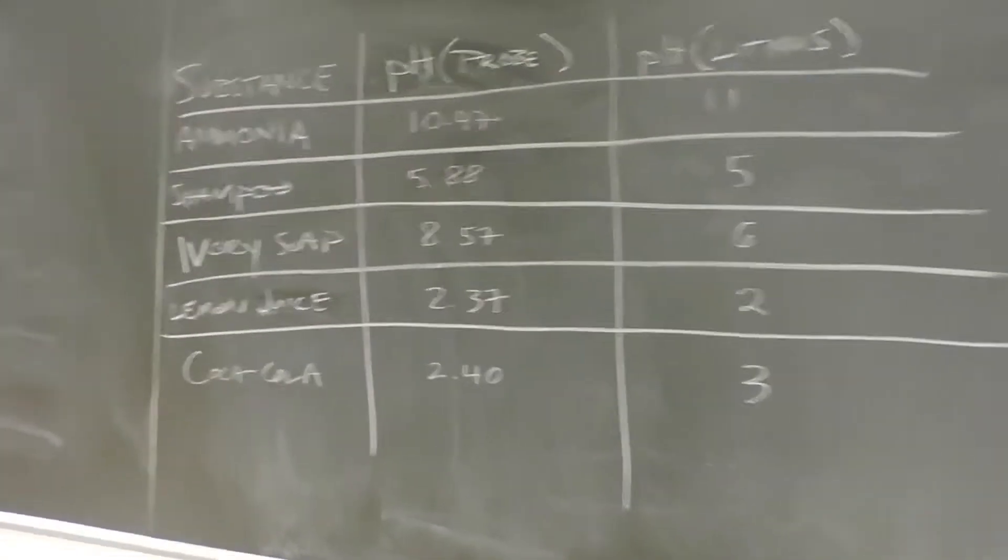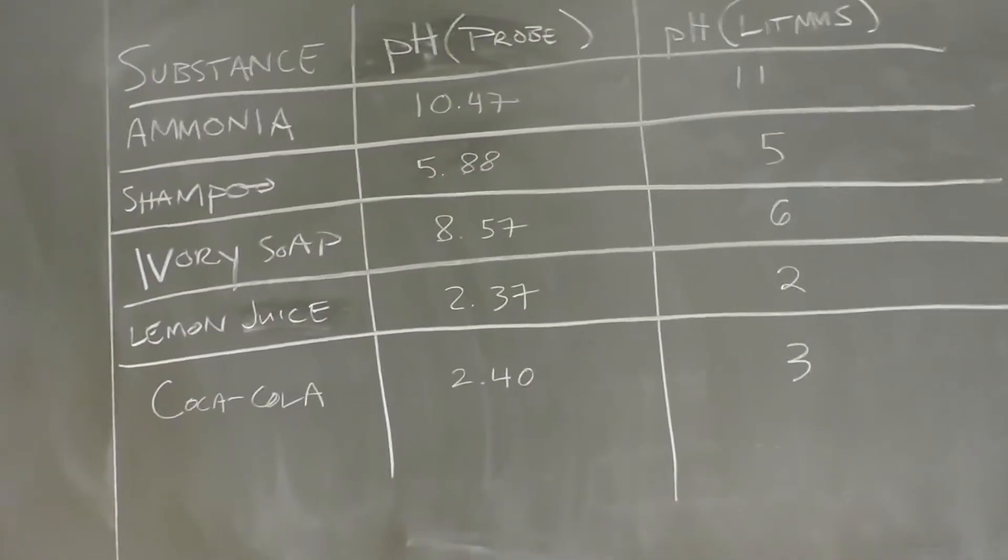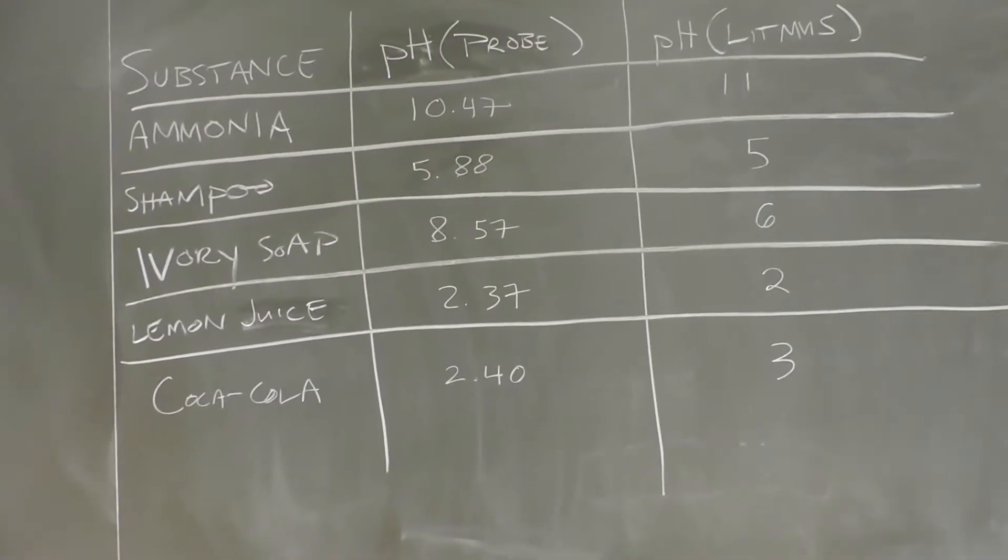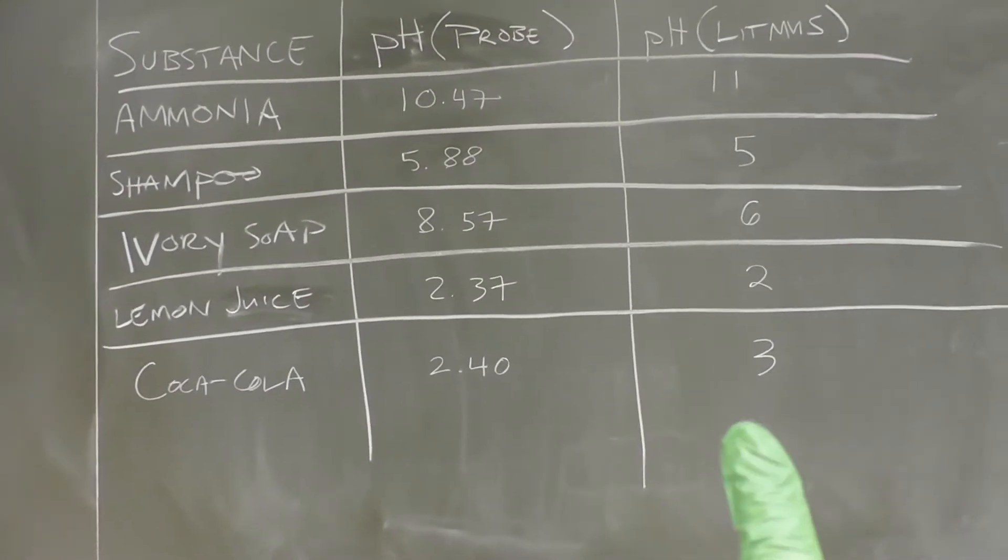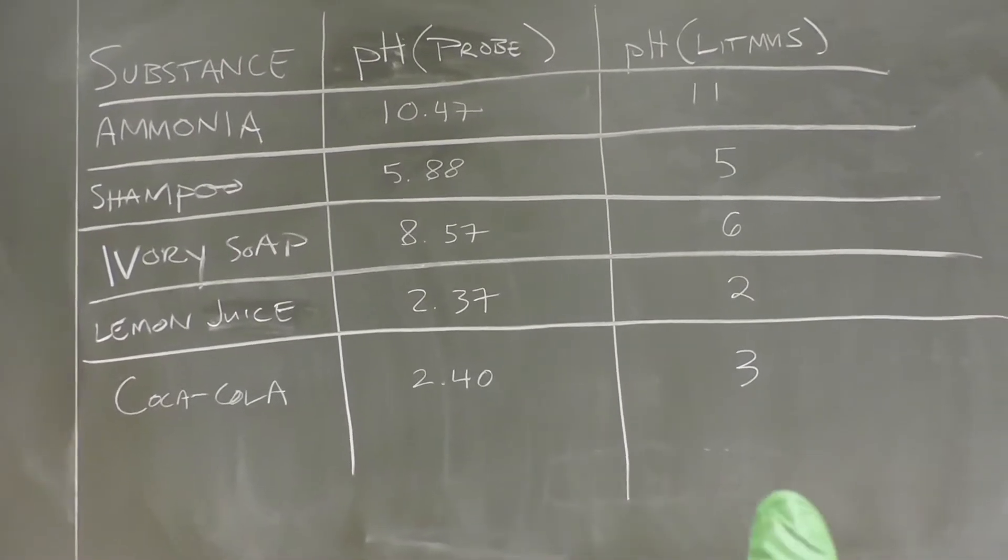So for the other substances, lemon juice pH and the Coca-Cola pH, these are the values for both the probe and the litmus paper.